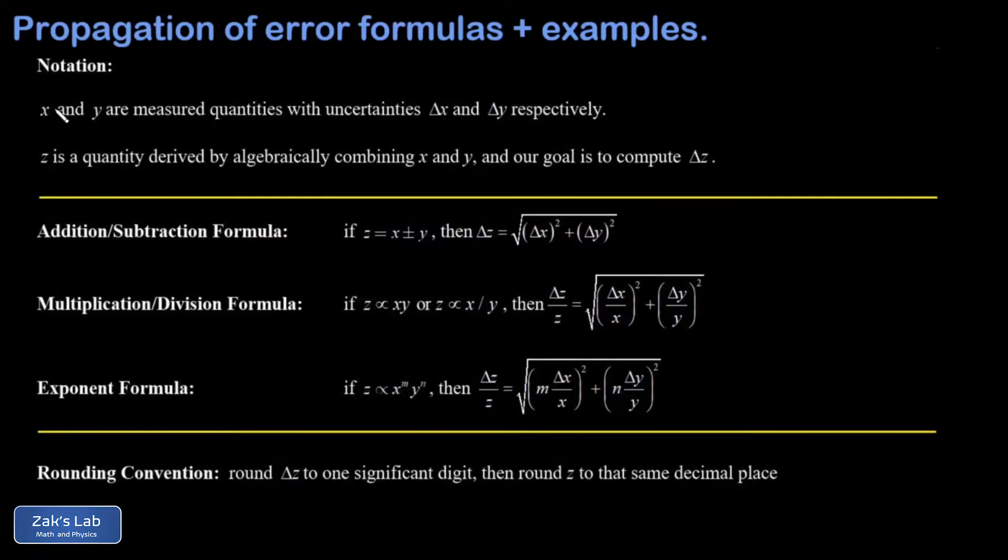Just to define the notation real quick, we're going to use x and y for the measured quantities that have uncertainties of delta x and delta y, and then we use z for the quantity that's derived by algebraically combining x and y, and then we use delta z for the uncertainty in z.